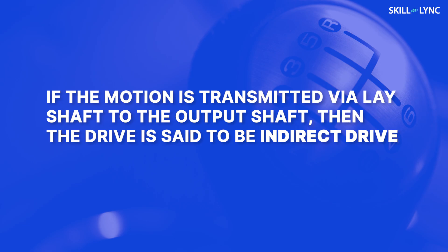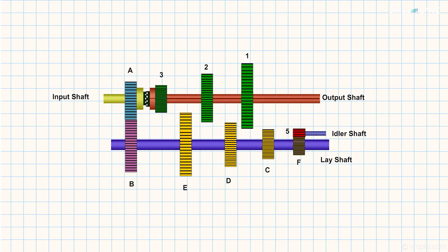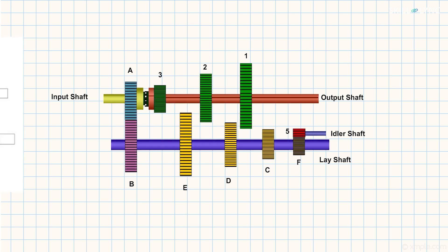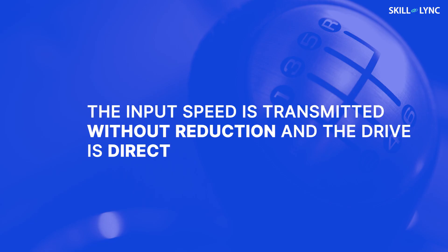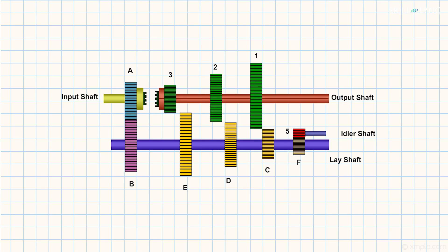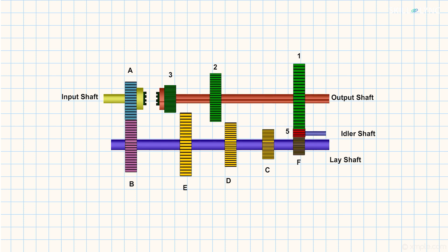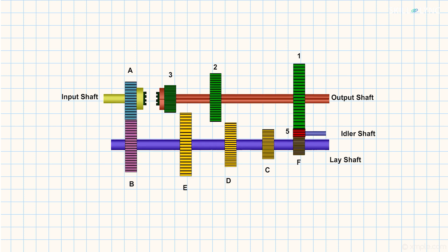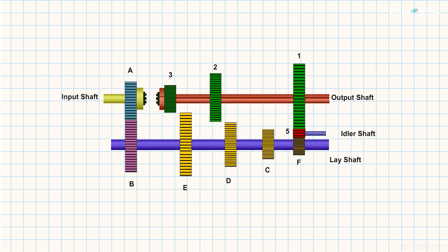The drives obtained by meshing of the gears 1 and C, 2 and D, and 3 and E are said to be indirect drives, as the motion is transmitted to the output shaft via the lay shaft. For the final gear, that is 4th gear, the gear 3 slides and meshes directly with the gear of the input shaft with the help of the dog clutch. This makes the output shaft rotate at the same speed as the input shaft and the drive is said to be direct drive. Finally, we have the reverse gear. It is obtained when the gear 1 meshes with the gear F. The idler gear present in between makes the output shaft rotate in the opposite direction, making the vehicle move in the reverse direction.